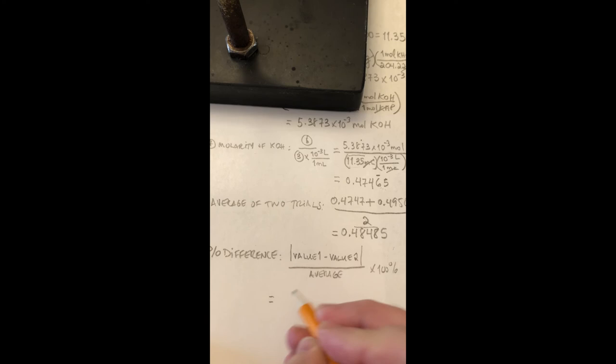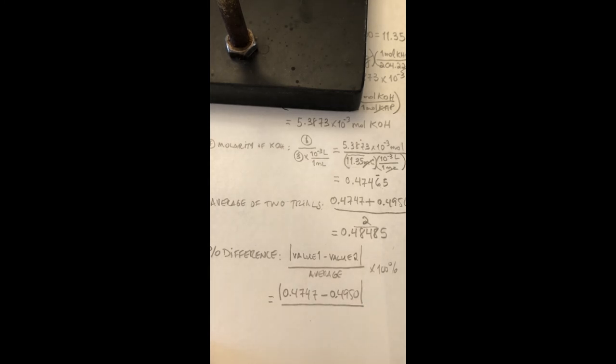So remember the formula. You take the absolute value of the difference between value 1 minus value 2. And we divide that by the average. And we multiply that times 100%. Okay? So in this case we had absolute value of 0.4747 minus 0.4950. We do absolute value because we're really not concerned as to whether it's, you know, plus or minus error above the average. Oops. Sorry. I was going to write the word average again. We already calculated that, right? We said it was 0.4849 times 100%.